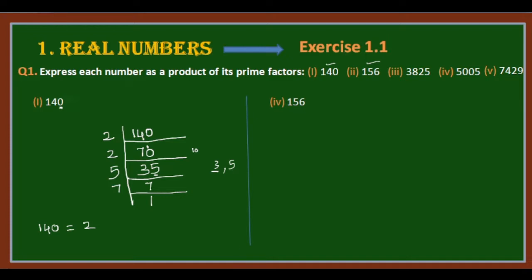We have 2, 5, and 7. So 2 into 2 into 5 into 7. According to the fundamental theorem of arithmetic, in ascending order, we have 2 to the power 2. So the answer as a product of its prime factors is 2² × 5 × 7.